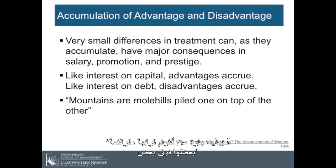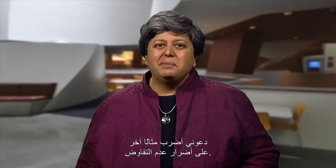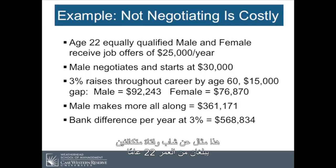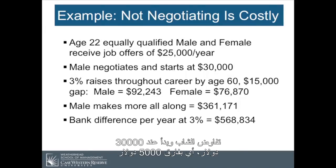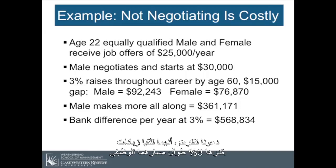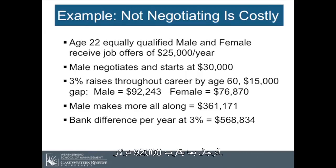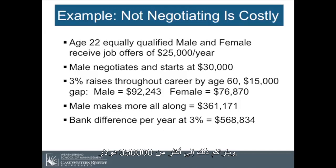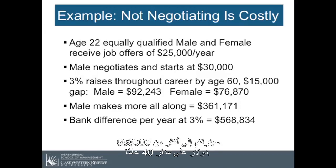From small differences come huge consequences — what is called the accumulation of advantage or the accumulation of disadvantage. Like interest on capital, advantages accrue. Like interest on debt, disadvantages accrue. Very small differences in treatment can, as they accumulate, have major consequences in salary, promotion, and prestige. As my colleague Virginia Valian has said, mountains are molehills piled one on top of the other. Here's an example: an age 22, equally qualified male and female receive job offers of $25,000 a year. The male negotiates and starts at $30,000. Assuming 3% raises throughout their career, by age 60, that's a $15,000 gap — men approximately $92,000, women approximately $76,000 — accumulating to more than $360,000.